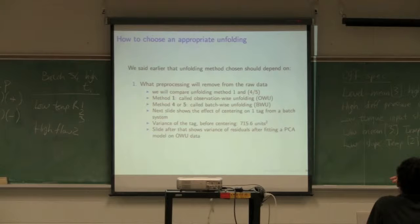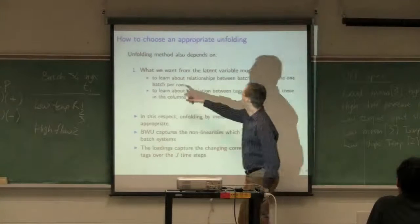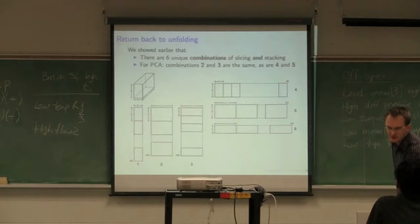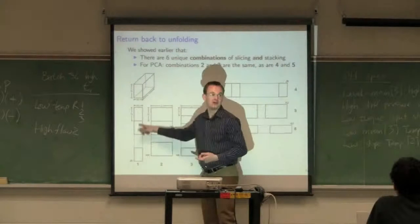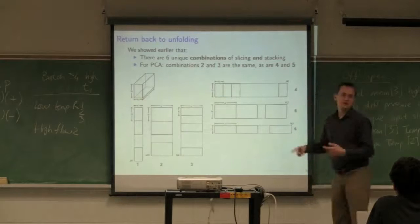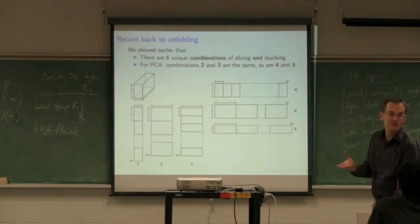Syncopate and ProMV use method one unfolding. The paper I asked you to read was written by myself and the Wolds, who own Syncopate and ProMV. We were contrasting method one to methods four and five. When you choose a particular unfolding, it's going to be dependent on your preprocessing. And furthermore, it depends on what you want to get from that latent variable model.